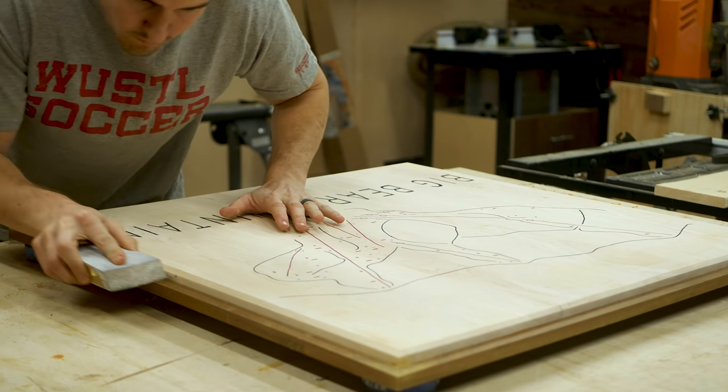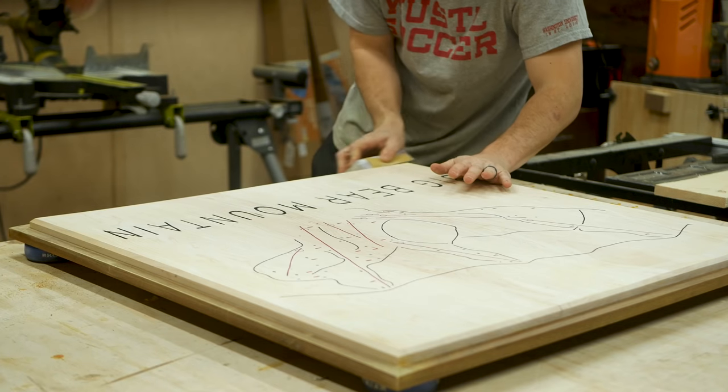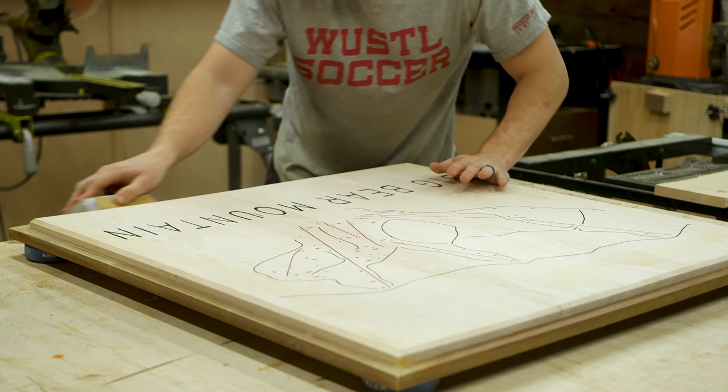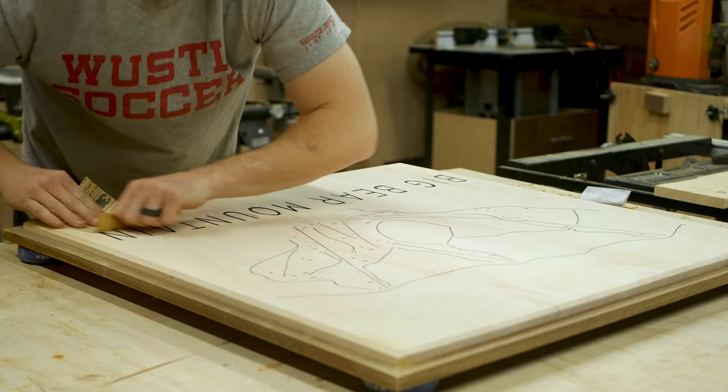The next day I used some 220 grit paper to sand off any excess glue, break the edges of the border, and do a final pass on the map to smooth things out.